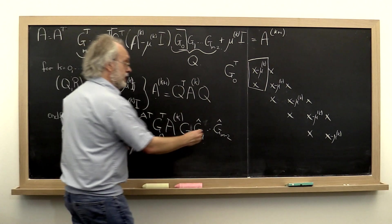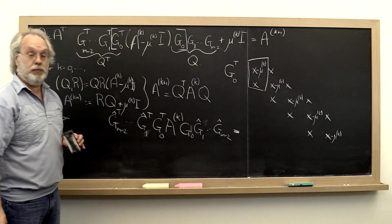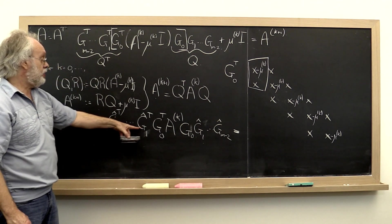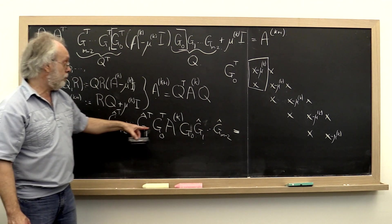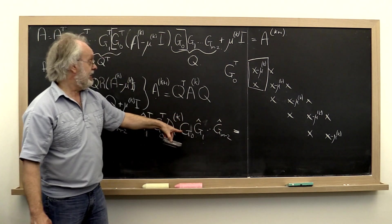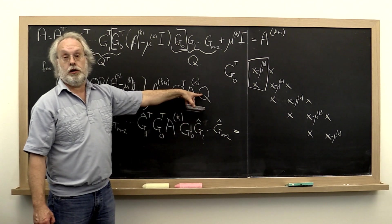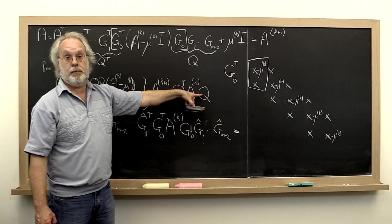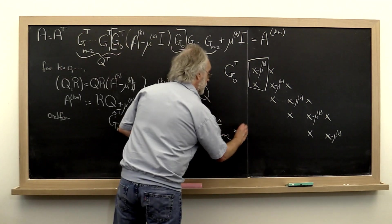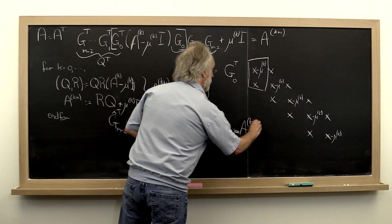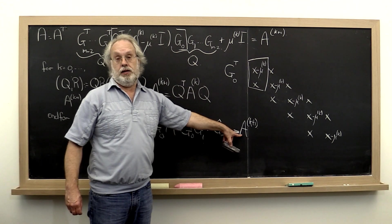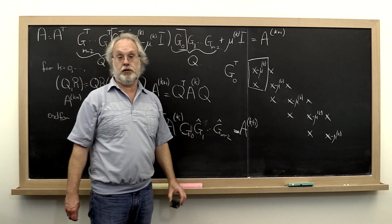And these additional Givens rotations have the property that the first column of this matrix here is the same as the first column of this Q right here, then the implicit Q theorem tells us that the resulting tridiagonal matrix is exactly the same as our next matrix A k plus 1. That's what the implicit Q theorem says.